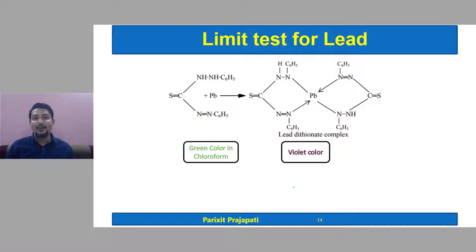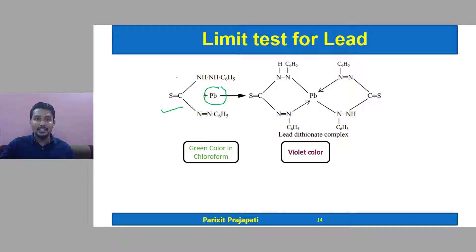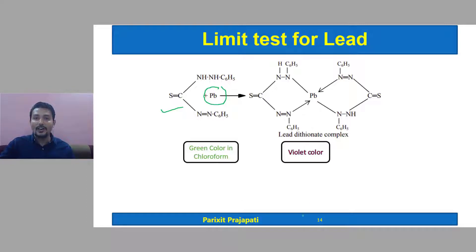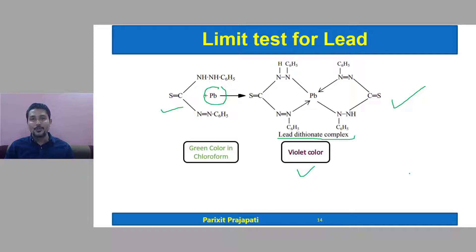The limit test for lead is based on the reaction of lead with dithizone, or diphenyl carbathizone. Dithizone in chloroform has a green color, but when it reacts with lead, it forms lead dithizonate complex, and that complex is of violet color.